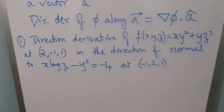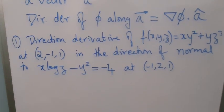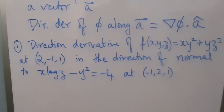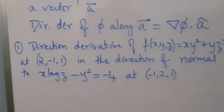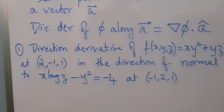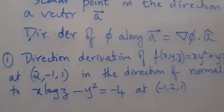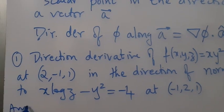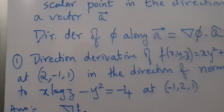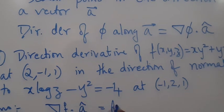Let us consider the example: find the directional derivative of f = xy² + yz³ at the point (2, -1, 1) in the direction of the normal to the surface x·log(z) - y² = -4 at the point (-1, 2, 1). Here we need to find grad f dot a-hat.